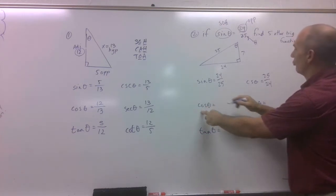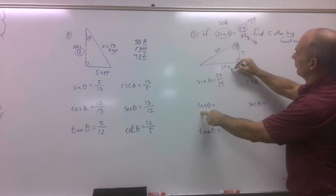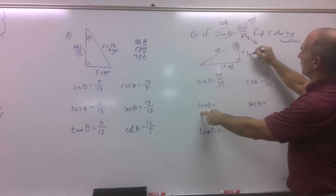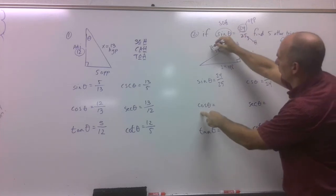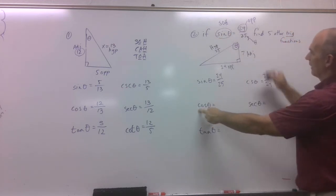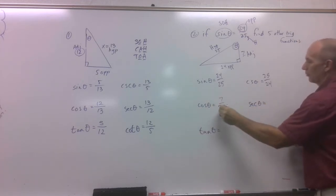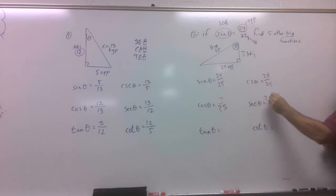Cosine. That is adjacent over hypotenuse. This is my reference angle. So there's my opposite, there's my adjacent, because this is my hypotenuse. Cosine is adjacent. It's 7 over my hypotenuse, 25. And now I flip that. Voila.